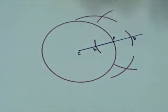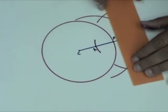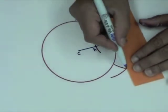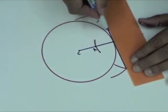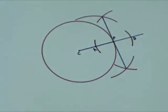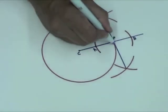Draw a line that passes through the points of intersection of the arcs. This line is perpendicular to CP at P.